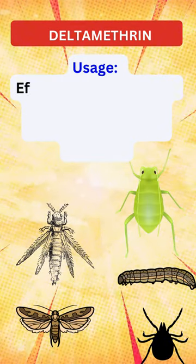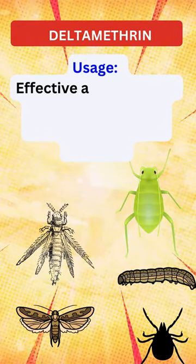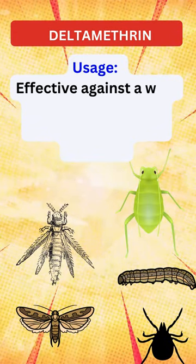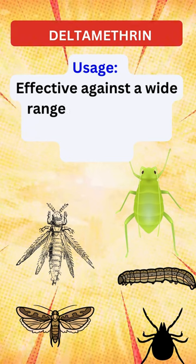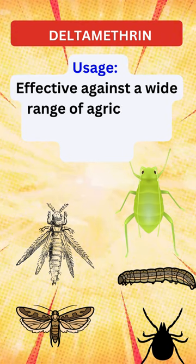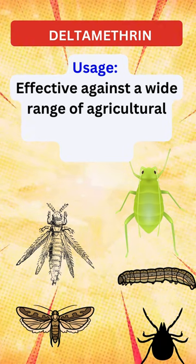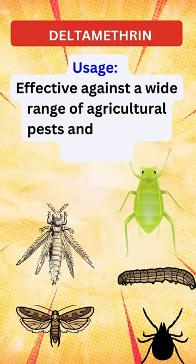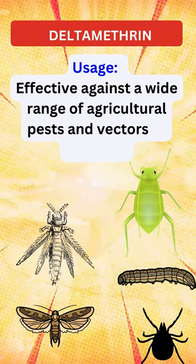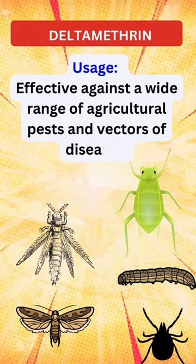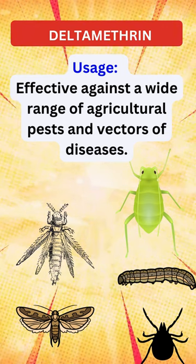Optimal applications. Deltamethrin exhibits effectiveness against a broad spectrum of agricultural pests, including both chewing and sucking insects, as well as vectors of diseases.